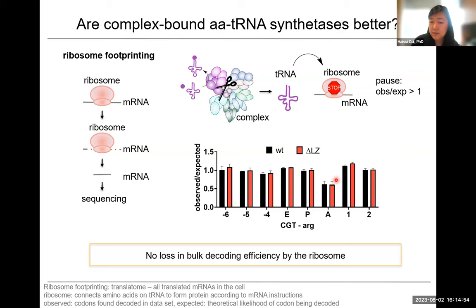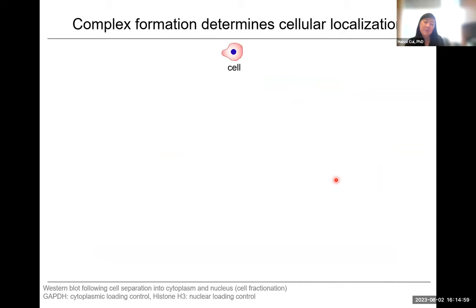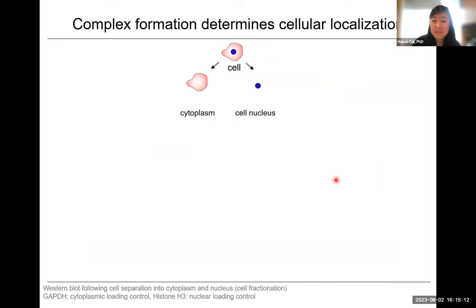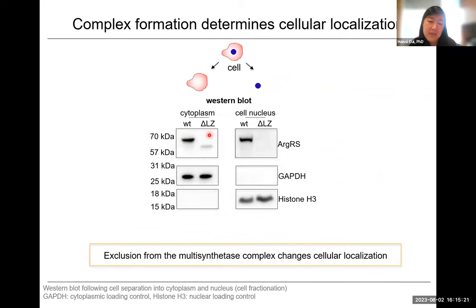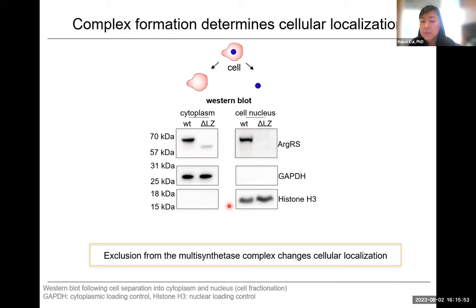That was quite surprising — if it doesn't influence translation, then what is it actually doing? We took a closer look at cellular localization, which is actually what our lab is largely focused on now, to see if there are differences when ArgRS is or isn't in the multisynthetase complex. Starting with simple cell fractionation to separate nucleus and cytoplasm, a certain amount of ArgRS is found in the nucleus. If we overexpose the blot, where we have about equal signal in cytoplasm versus nucleus, you can see the shorter band for delta-leucine zipper ArgRS in the cytoplasm but not in the nucleus. We seem to lose the nuclear localization of ArgRS when excluding it from the multisynthetase complex, suggesting that complex formation contributes to the cellular localization of the tRNA synthetase rather than ensuring adequate tRNA charging.